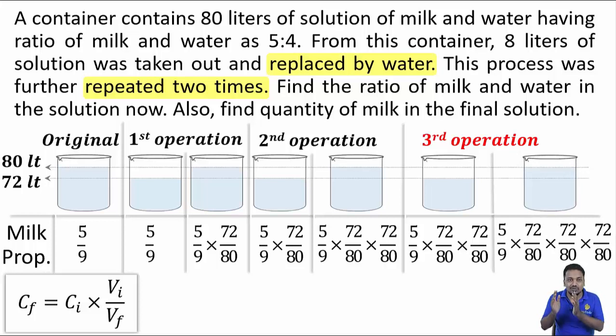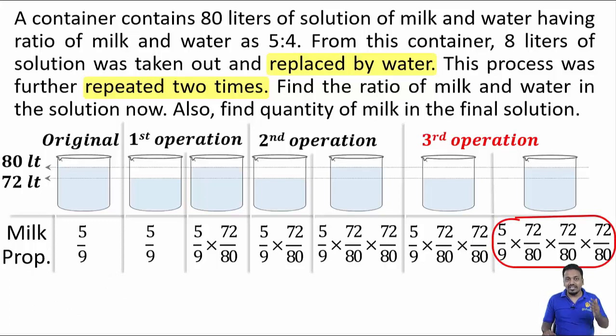So, if the same operation is done in total 100 times, we will multiply 72/80 100 times into 5/9 for new milk proportion. For now, this is the final milk proportion which on reducing comes out to be 81/200.